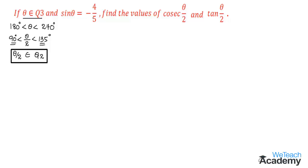We are given sin theta equals minus 4 by 5. To find cos theta, let us consider a right angle triangle. By the definition of sin theta, which is opposite by hypotenuse, the opposite side is 4 and the hypotenuse is 5. We need to find the adjacent side — let us assume it is p. Using the Pythagorean theorem: hypotenuse squared equals opposite squared plus adjacent squared, so 5 squared equals 4 squared plus p squared.